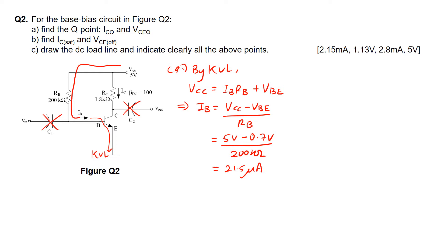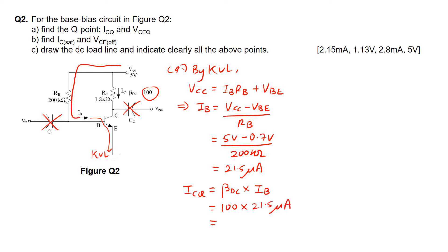To calculate ICQ of this base bias circuit: ICQ equals beta_DC times IB. Substituting the values, beta_DC is given as 100. So we have 100 times 21.5 microamps, therefore ICQ equals 2.15 milliamperes.